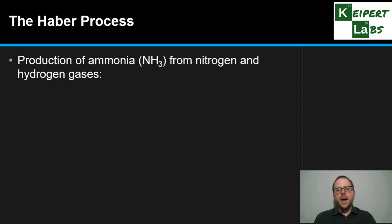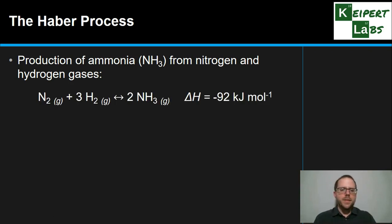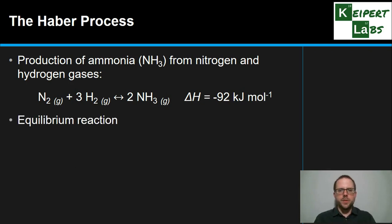So let's look at the Haber process. The Haber process is a reaction to produce ammonia from its constituent elements — that is, nitrogen and hydrogen gases. This is the chemical equation for what we see. We've got a one-to-three ratio of the reactants producing two moles of ammonia, and it has a delta H value of minus 92 kilojoules per mole. One thing to notice from the way it's written here is that it is an equilibrium reaction, which is going to have a massive impact on the way that we use the Haber process to produce ammonia.